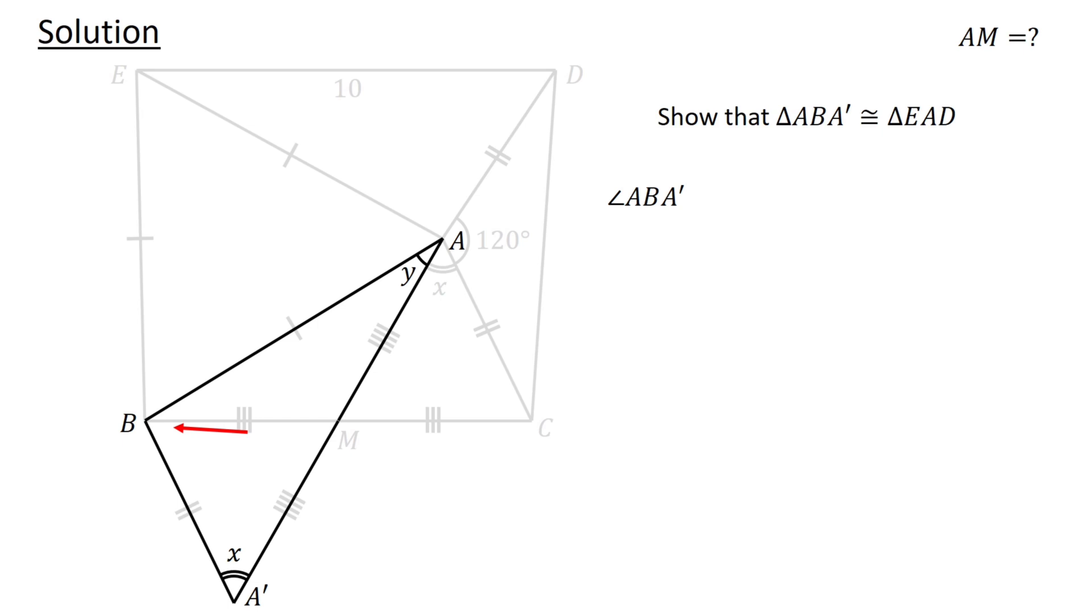Since the interior angles of a triangle sum to 180 degrees, we have angle ABA' plus X plus Y equals 180 degrees. Therefore, angle ABA' equals 180 degrees minus X minus Y.